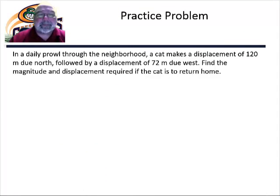Here's a practice problem. In a daily prowl through the neighborhood, a cat makes a displacement 120 meters due north, followed by a displacement of 72 meters due west. Find the magnitude and displacement required if the cat is to return home.